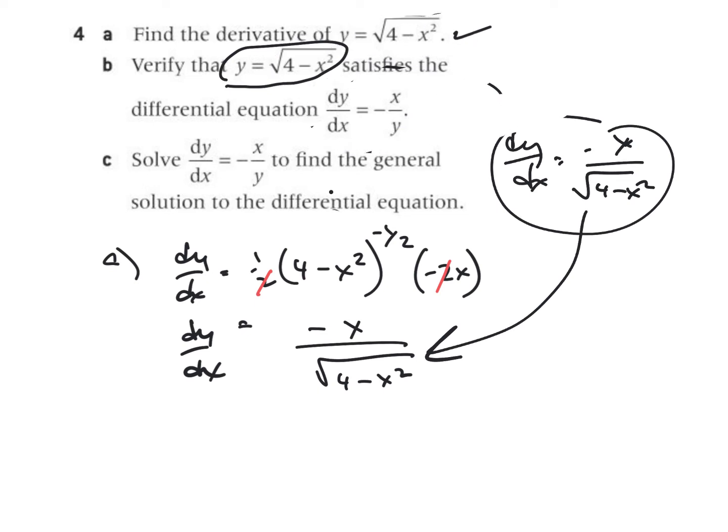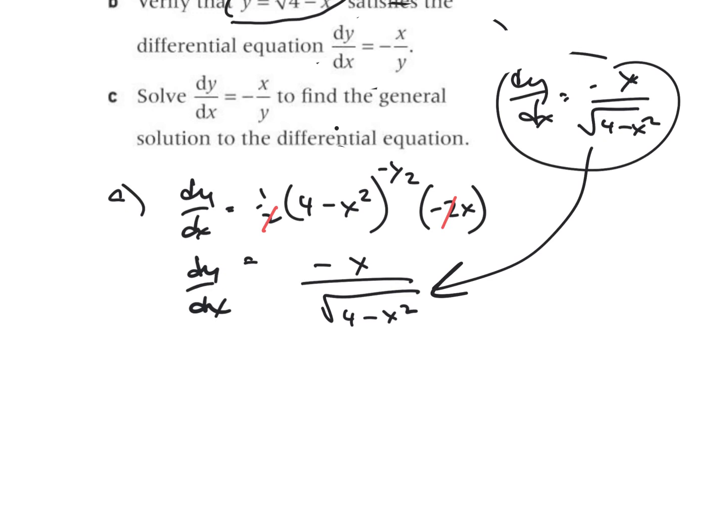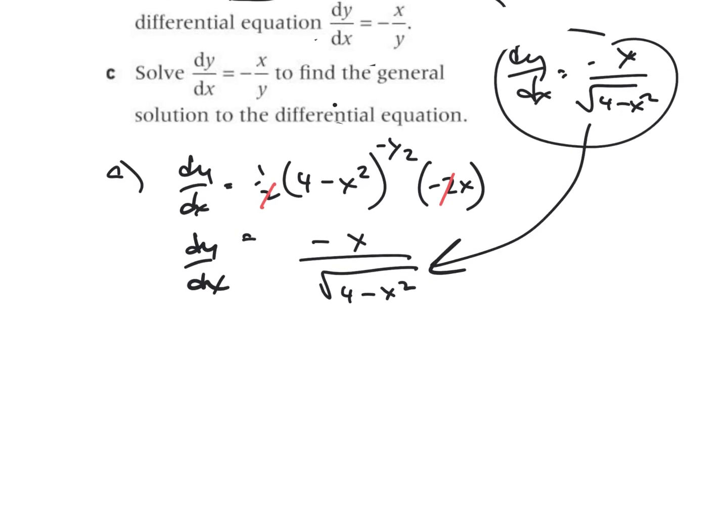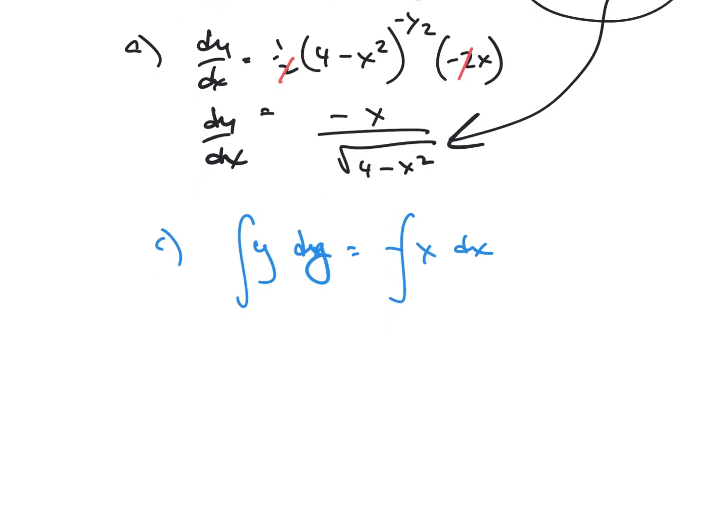And then finally, for the last part, we solve this particular differential equation. We're going to do it the general case, the general solution. So to do so, I'm going to multiply both sides by y and also by dx. And then I'm going to integrate both sides, separating the variables.